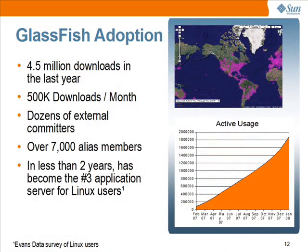Adoption of Glassfish is growing rapidly with over 4.5 million downloads over the past year, and now trending to 500,000 downloads a month. Over 7,000 members participate in the Glassfish mail aliases, both asking questions and delivering responses. With dozens of committers returning improvements into the code, Glassfish continues to increase its features, its reliability, and integration of new technologies.